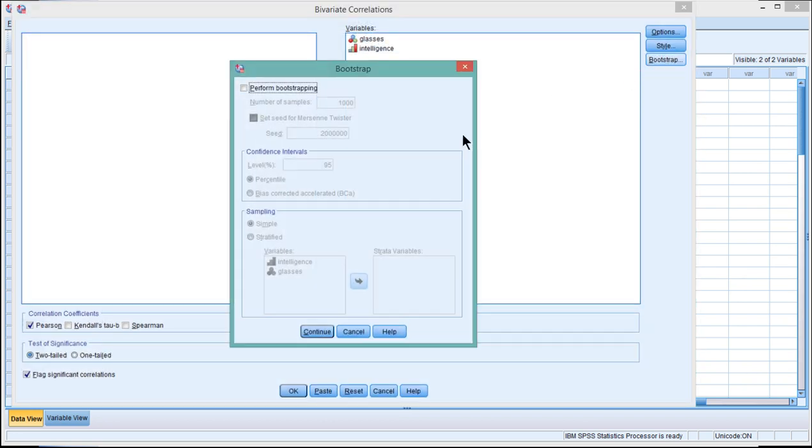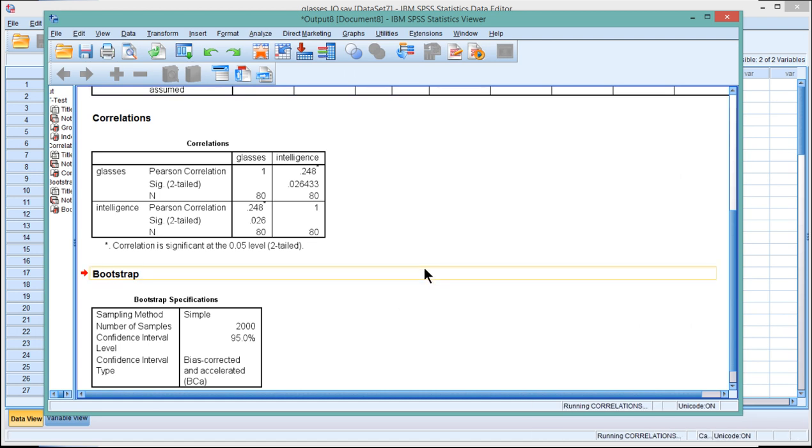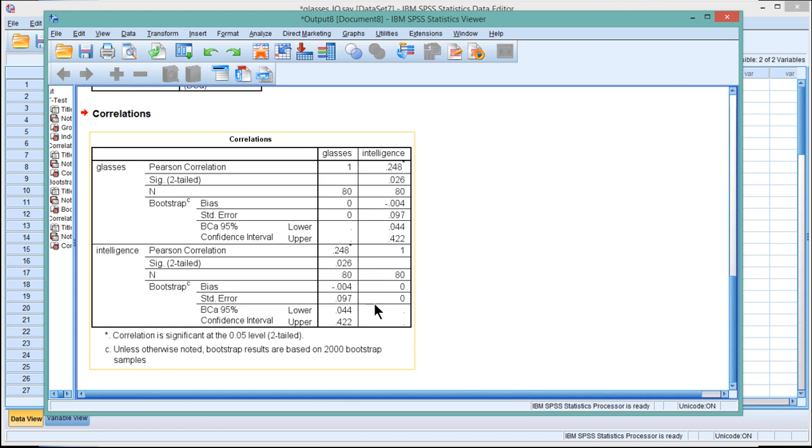I need to click on Bootstrap, and click Bias Corrected Accelerated, and probably 2,000 replications or number of samples. Click OK. So now it's going to take a minute or so to calculate the bootstrap standard error and the lower bound and upper bound point-biserial correlations. And here we have them. We have got the lower bound of 0.044 and the upper bound of 0.422.